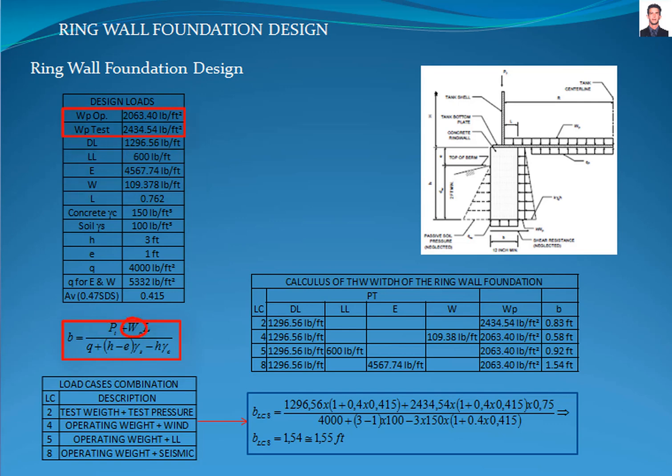WP is the operational or testing weight load. L is the distance from the shell tank to the inside edge of the ring wall and is obtained from table 2 of the PAP-STE-03-020 standard, and its value for this case is 0.75 feet. Q is the allowed bearing capacity of the soil.